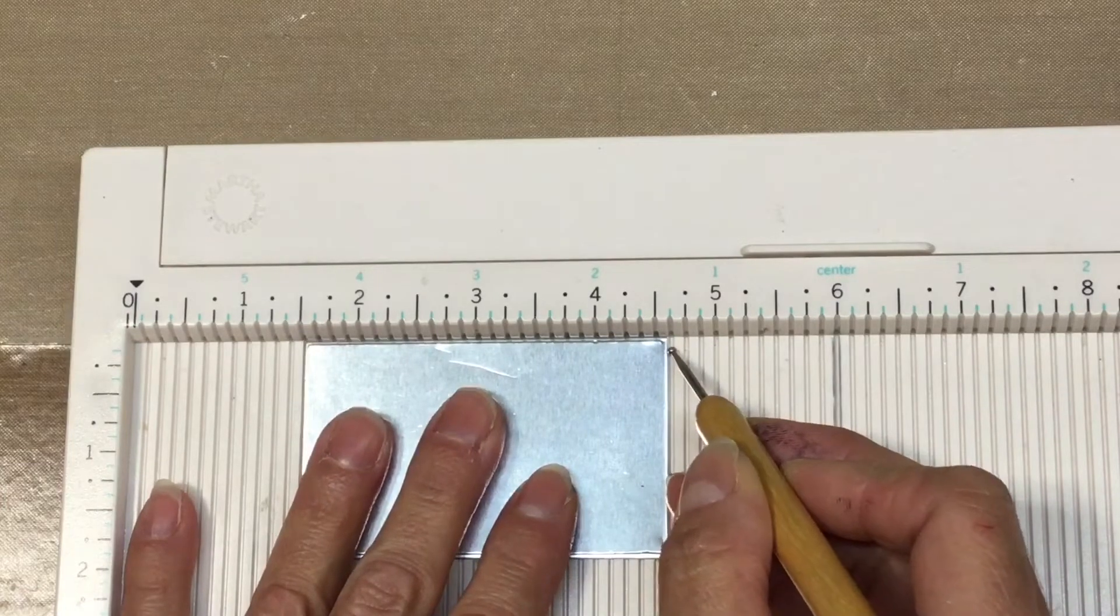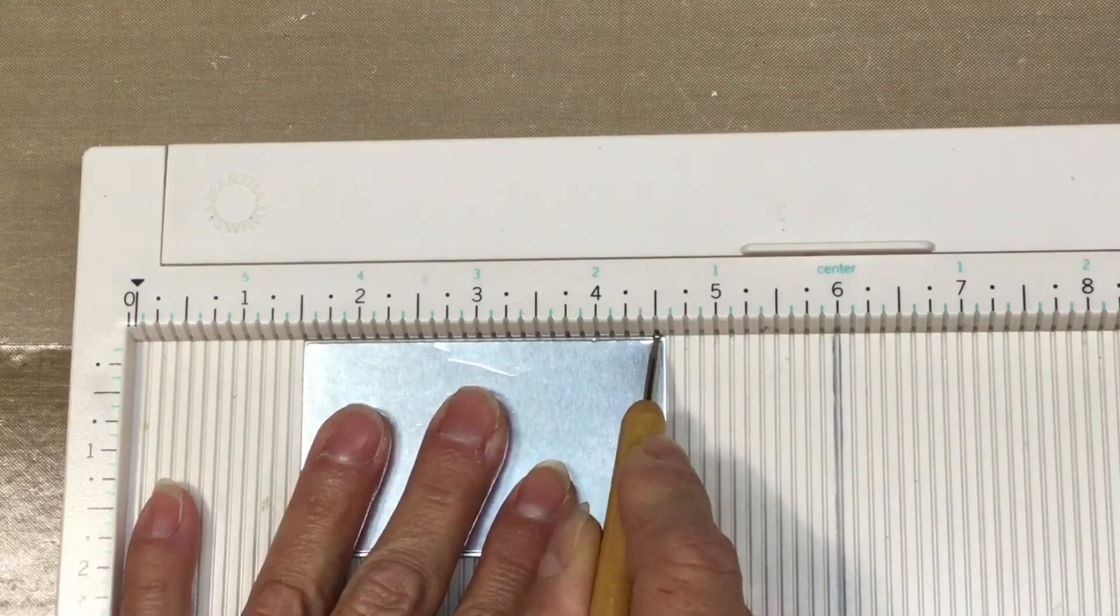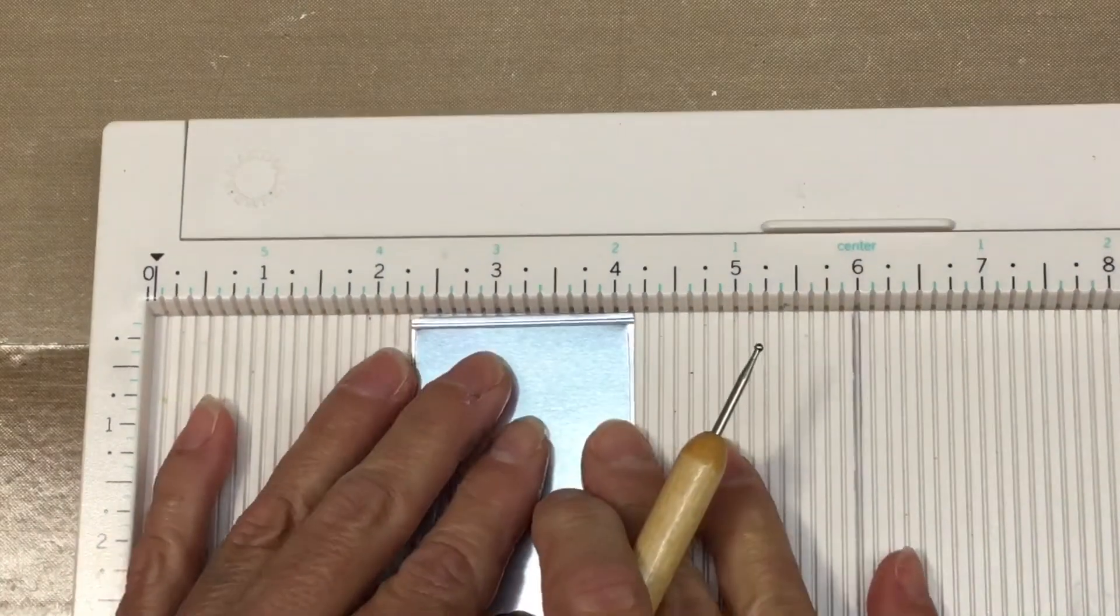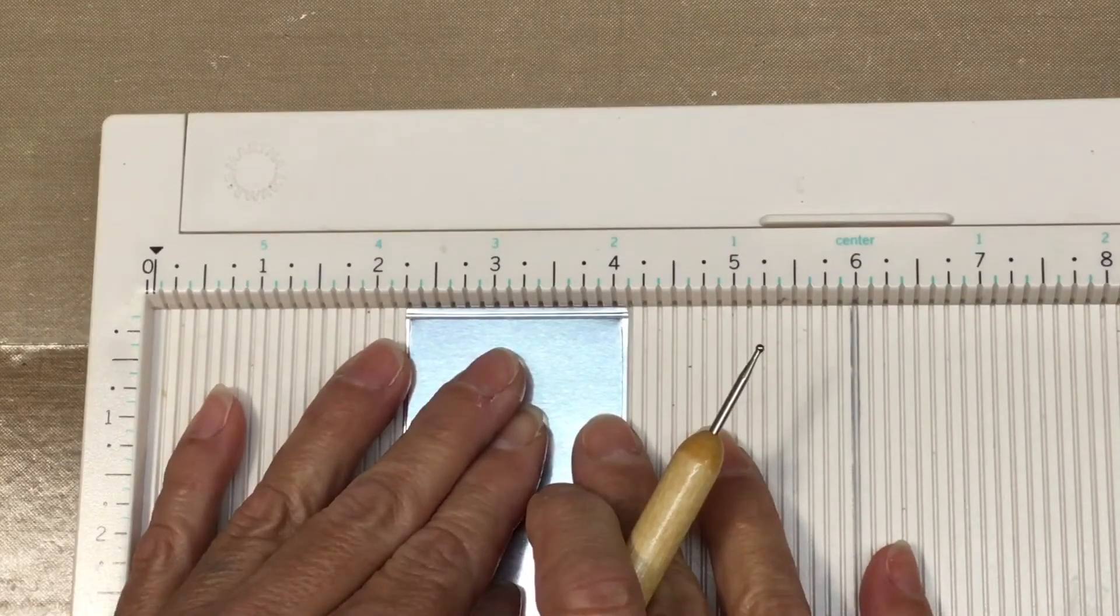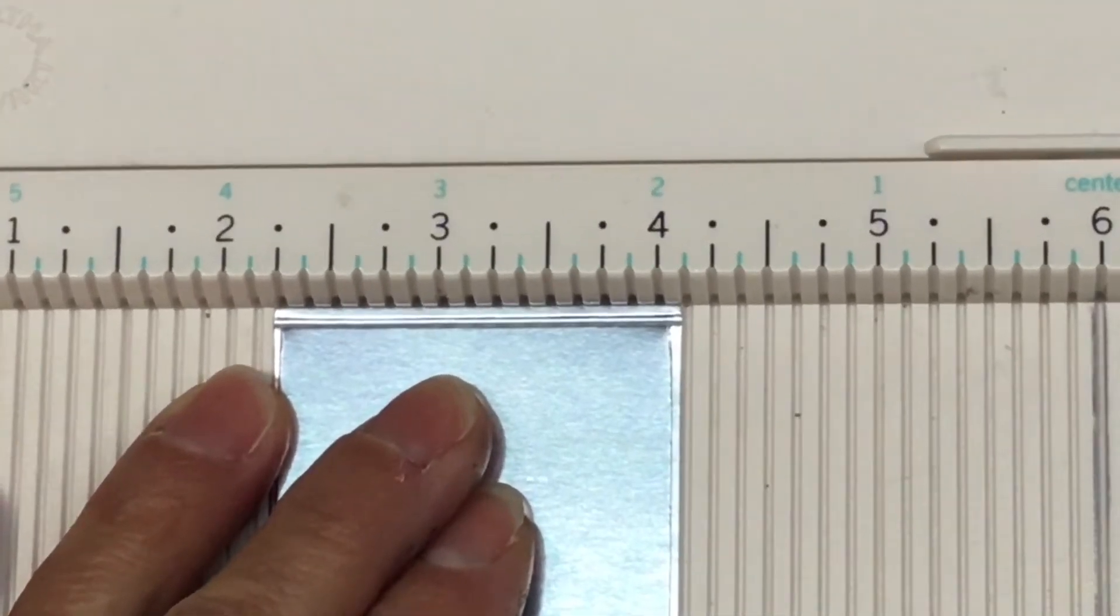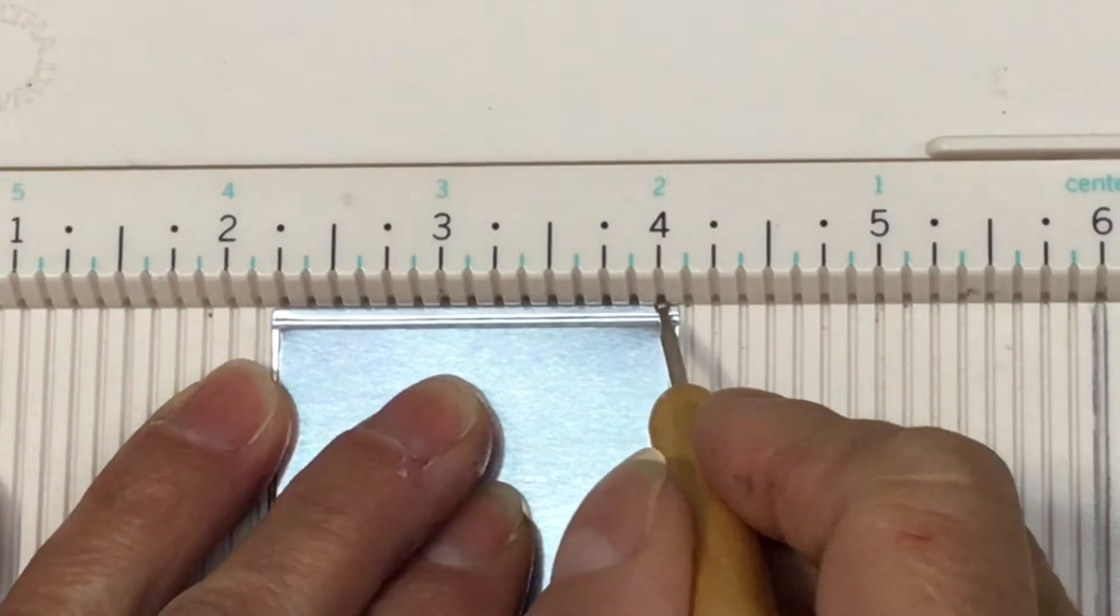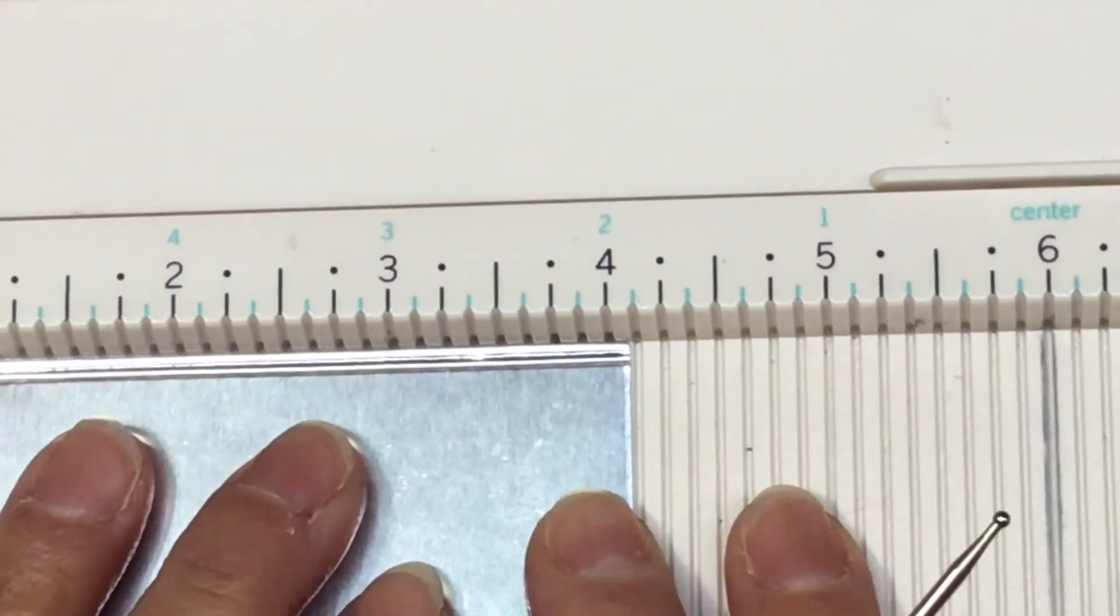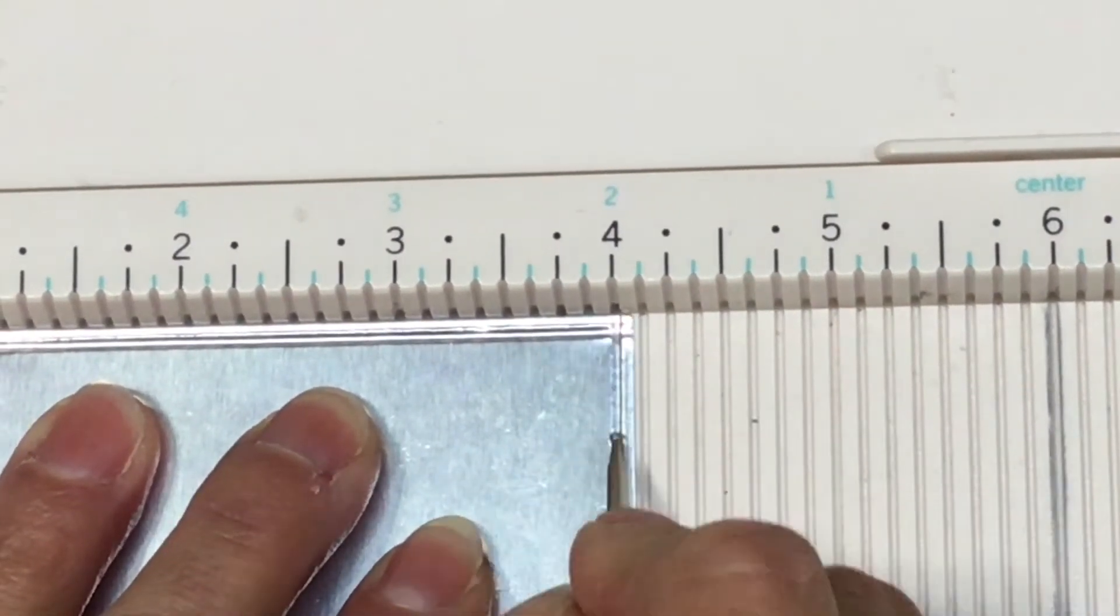So you just want to line it up wherever you're comfortable on your scoreboard. And I'm just going in at just under one-eighth of an inch. I'm just kind of moving the paper over just so I'm not quite one-eighth of an inch, but I'm sure you could go one-eighth of an inch. I just made it that little bit off. So I'm just going ahead and doing all four corners.